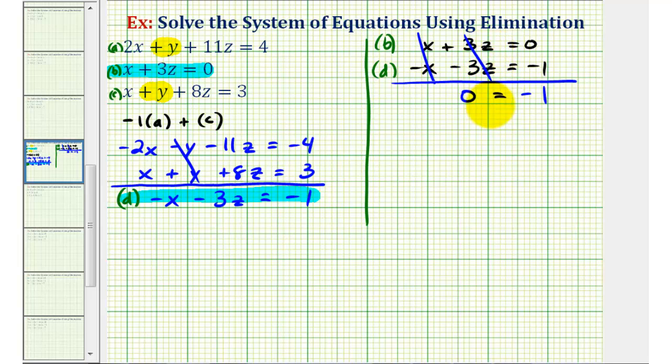it's either going to be a true equation or a false equation. Well, we know that zero does not equal negative one. So when this equation is false, this is telling us that the system has no solution.